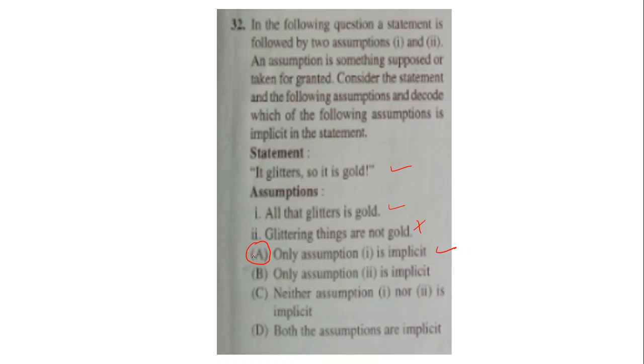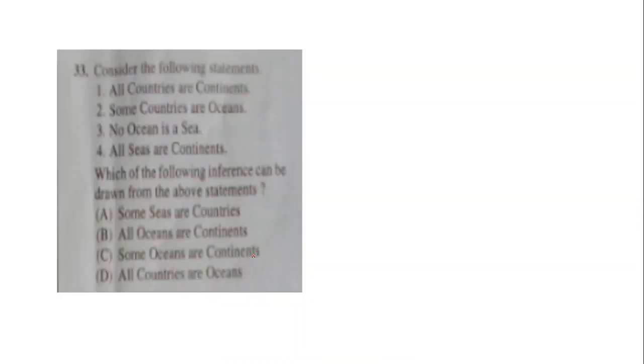Next is consider the following statement. I have left this space here so that we can solve this question. All countries are continents. These are four statements that have been given to you in yesterday's examination. Some countries are oceans. No ocean is a sea. All sea are continents. Now we were given inferences and we had to find which of the inferences can be drawn from the above statements. The options were: some sea are countries, all ocean are countries, some oceans are continents, or all countries are oceans.